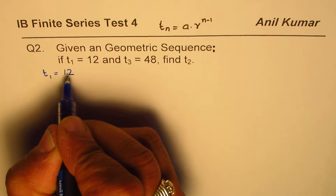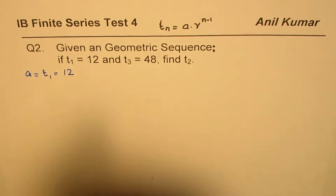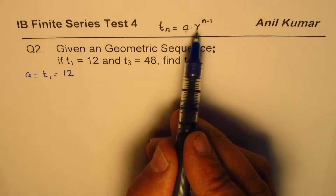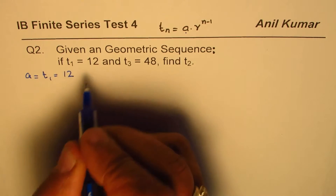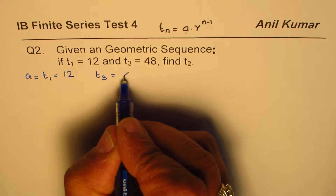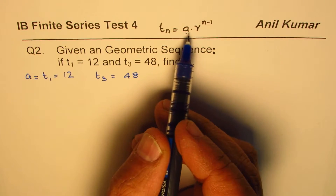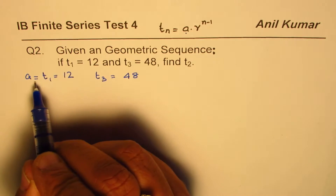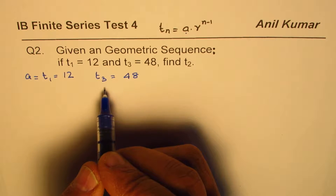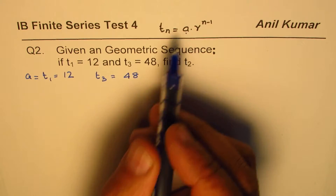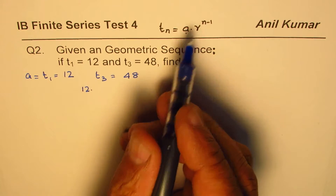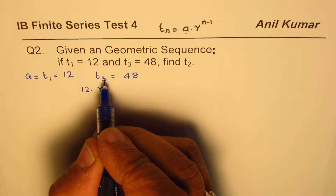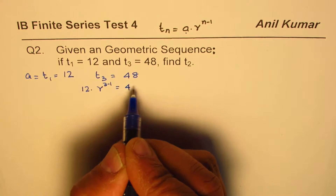Let's use this formula to solve. We are given t1, which is also 'a', so t1 equals 12 means a equals 12. We need to find r, which we can determine from t3. We are given t3 equals 48. Using the formula, we write a as 12 and n as 3, so we have 12 times r to the power of 3 minus 1 equals 48.